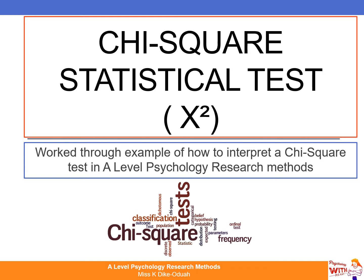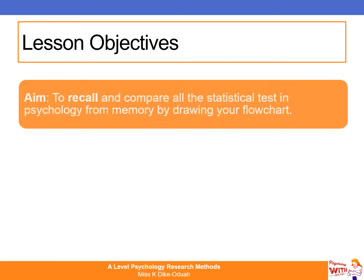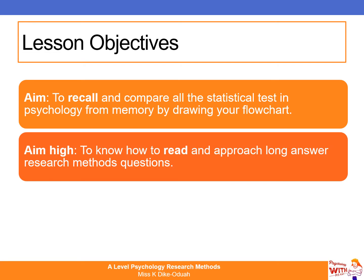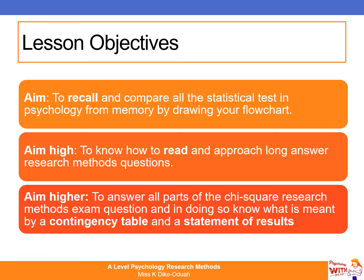Make sure that you do take notes and pause the slides when you need to, to ensure that your notes on statistical testing are sufficient. In terms of our lesson objectives for today, you want to be able to recall and compare the statistical tests in psychology from memory by drawing your flowchart. I also want you to understand how to read and approach long answer research methods questions, answer all parts of the chi-square exam question, and understand what is meant by a contingency table and a statement of results.